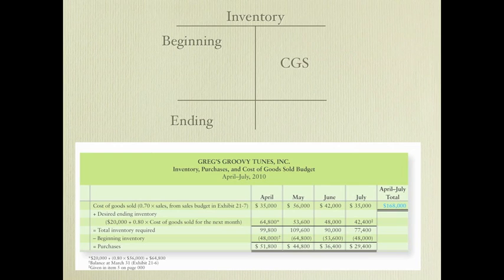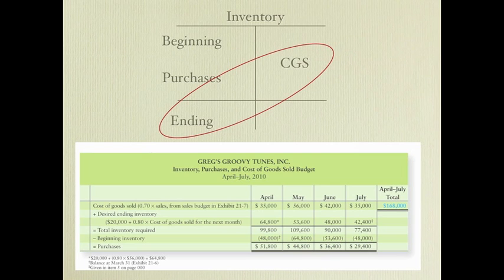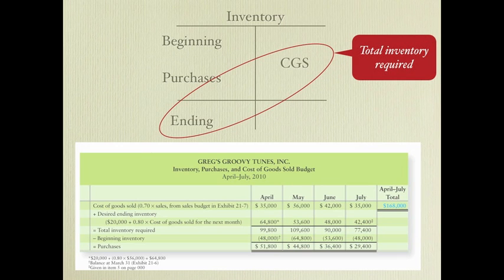Once we have these three numbers — beginning is a given, while cost of goods sold and ending are estimates — we can calculate what purchases would be. Beginning plus purchases must cover cost of goods sold plus ending, because cost of goods sold plus ending is the total inventory required, which must be covered by beginning plus purchases.